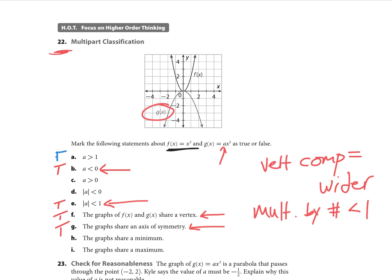What is false? a is not greater than 1 because if that were the case then it would be opening up. It is not greater than zero, same thing. Absolute value of a is less than zero is also not true, remember absolute value would be some sort of positive number. The graphs share a minimum, that is false because f(x) has a minimum but g(x) has a maximum. So they don't share a maximum either. That's what your homework is going to look like today and hopefully this video will help you in getting that done.